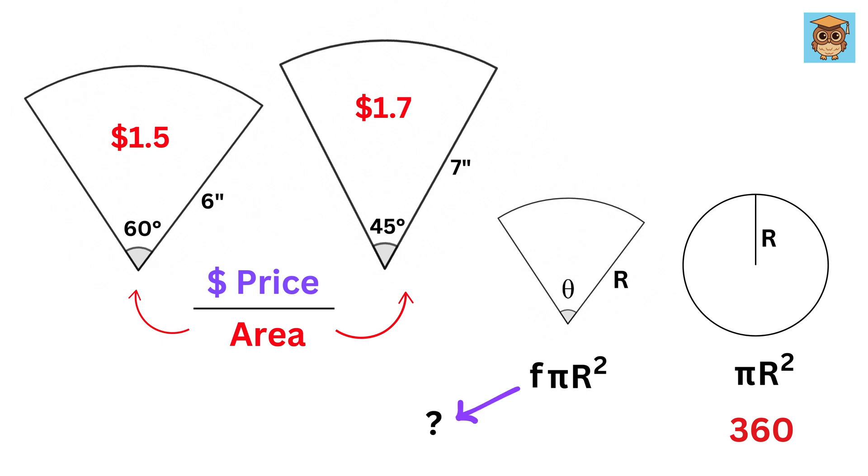So what do you think this fraction will be? Yes, you are again right. It will be this theta over 360, times πr². This is the area of a sector.